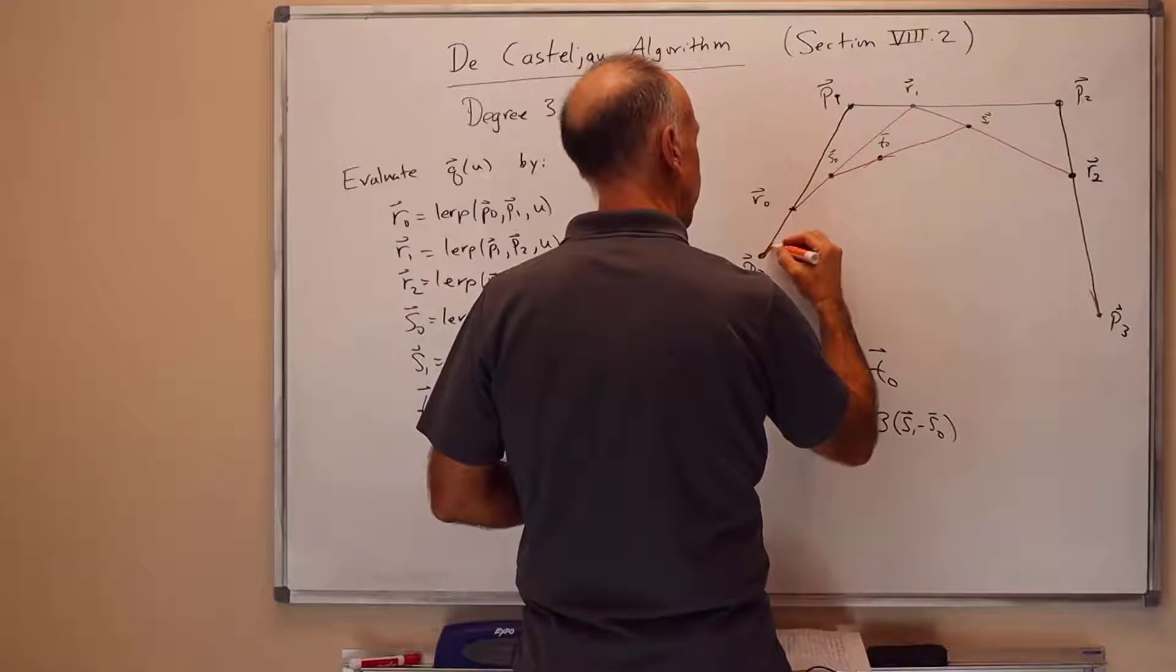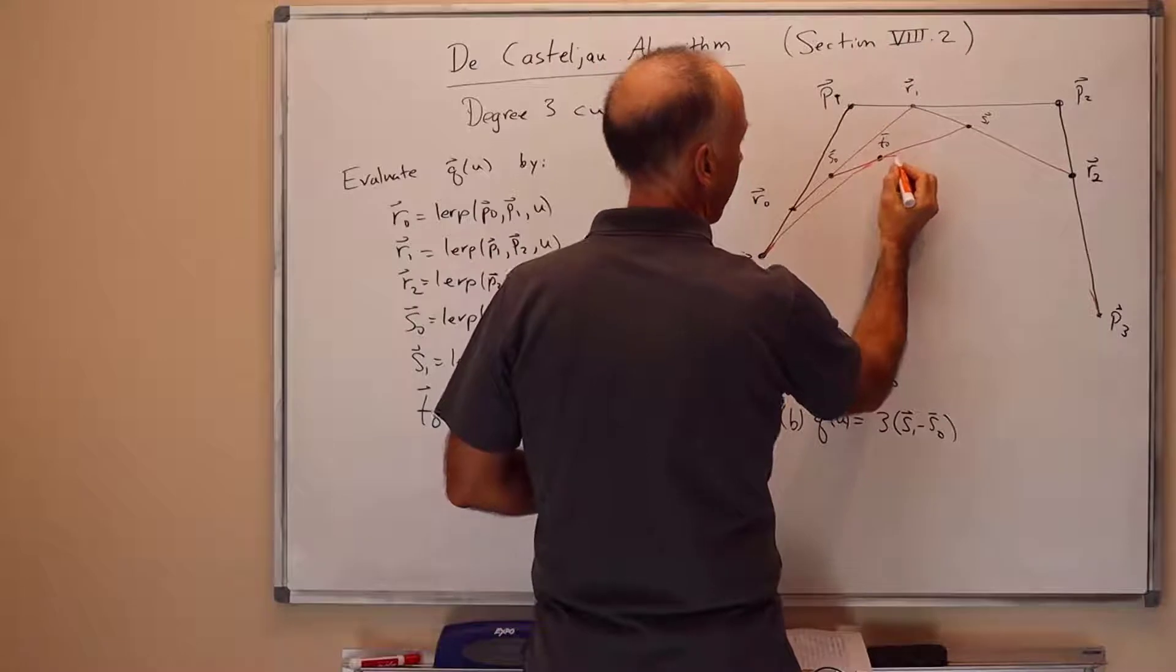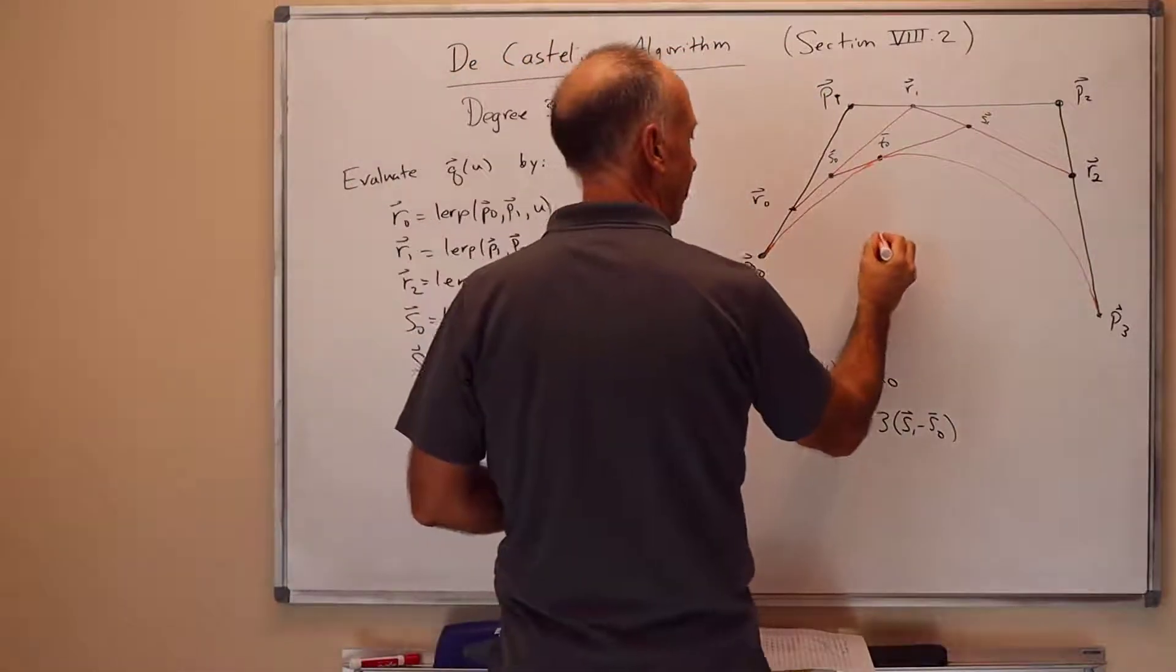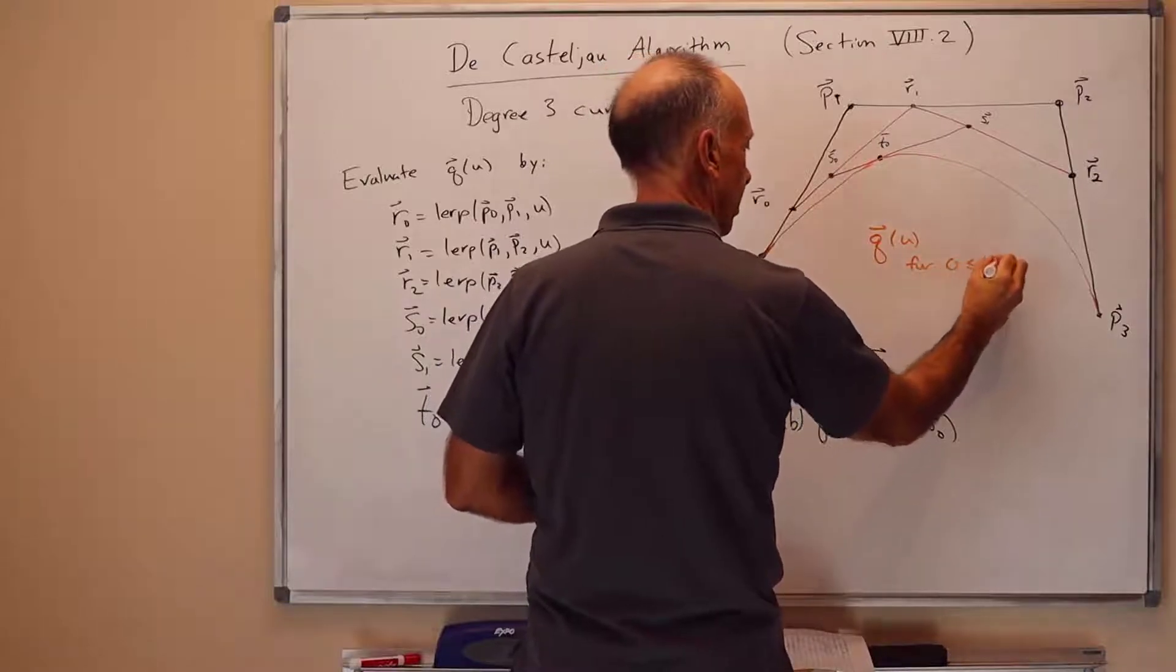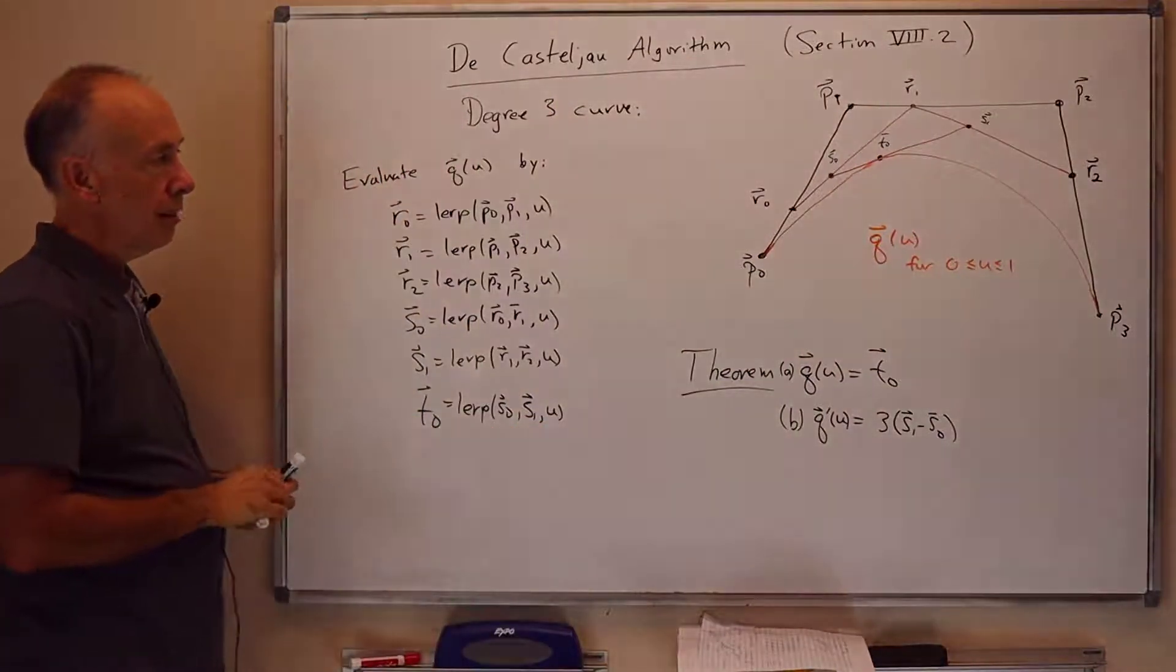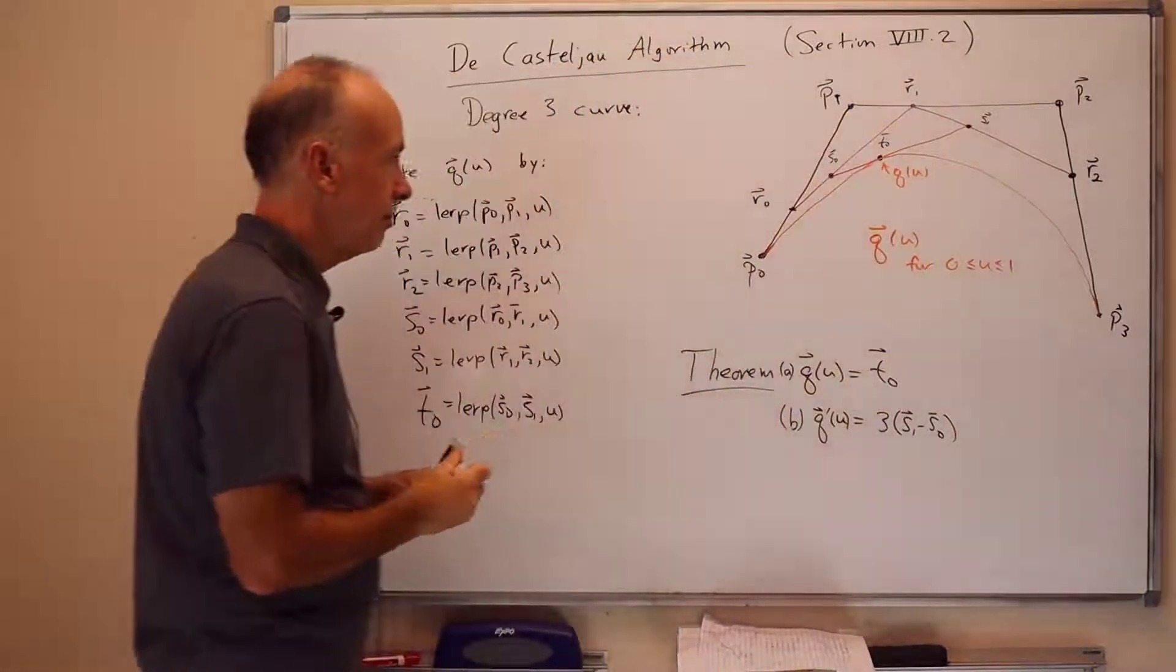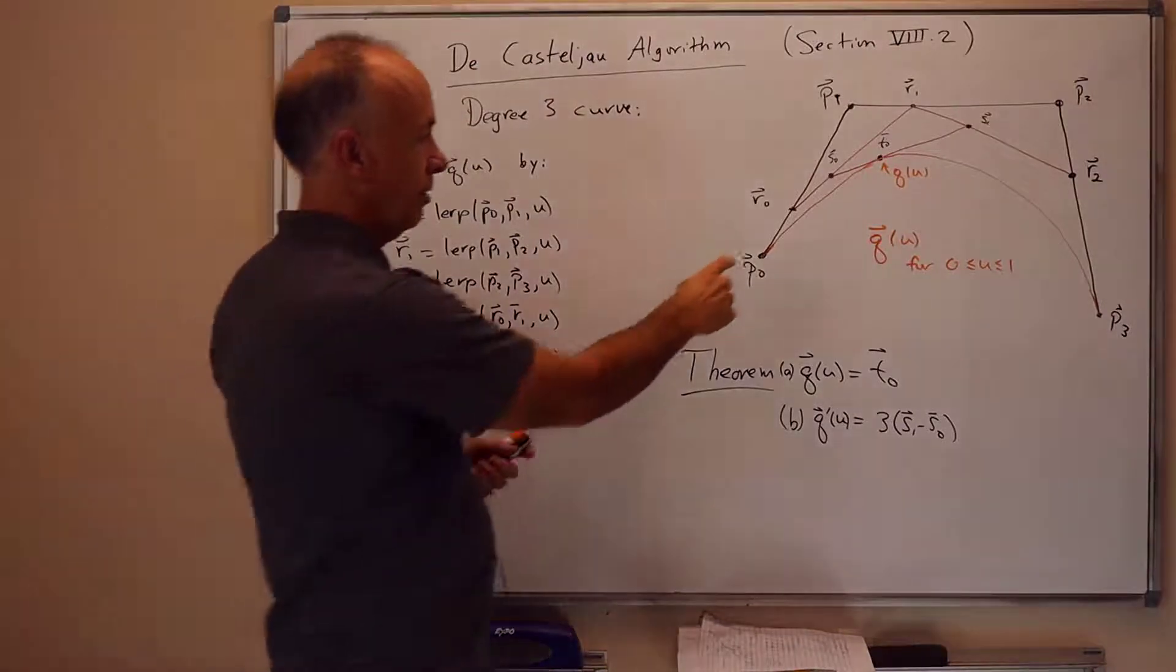So this means we can then, with that information, pretty rapidly fill in a pretty accurate freehand sketch of the curve. So this orange part here is Q of U for now for all values of U between 0 and 1. So the whole curve is the whole orange thing.